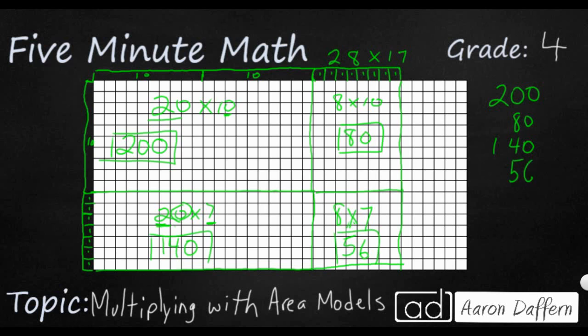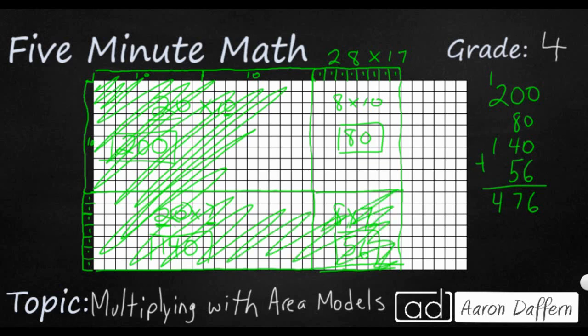So what I have now are four partial products. 200 plus 80 plus 140 plus 56 is 476. If you wanted to stop and count on the screen, you would actually count 476 squares. That's actually what I just colored in right here is 476 squares.